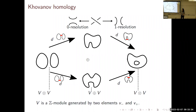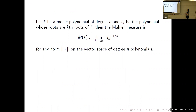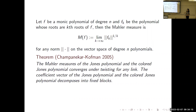The chain complex is a link invariant that categorifies the Jones polynomial. The only thing we really need for the rest is to think about how big this cube is if you have a link with many crossings, for example, in infinite torus links. Let f be a monic polynomial of degree n, and let f_k be the polynomial whose roots are the k-th roots of f. Then the Mahler measure is the limit of this polynomial with this norm on the vector space of degree n polynomials.